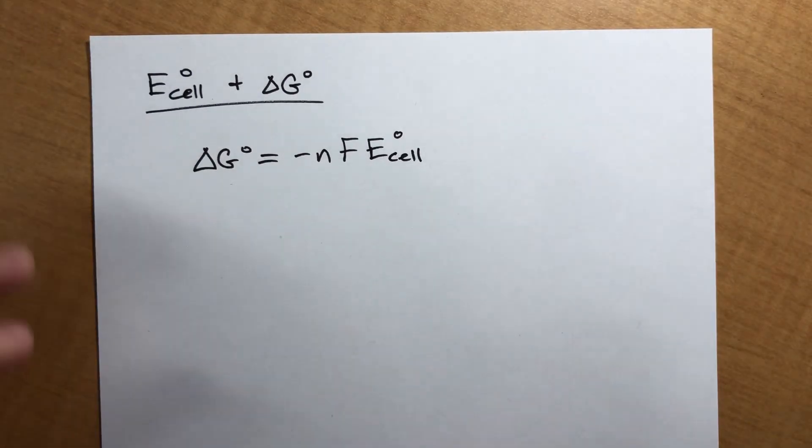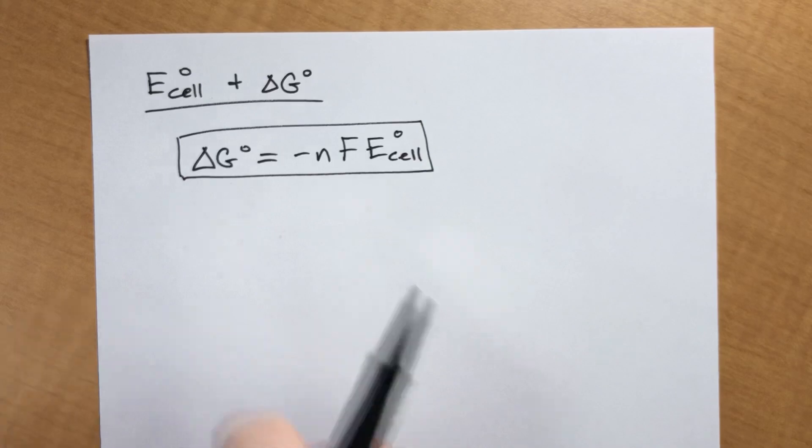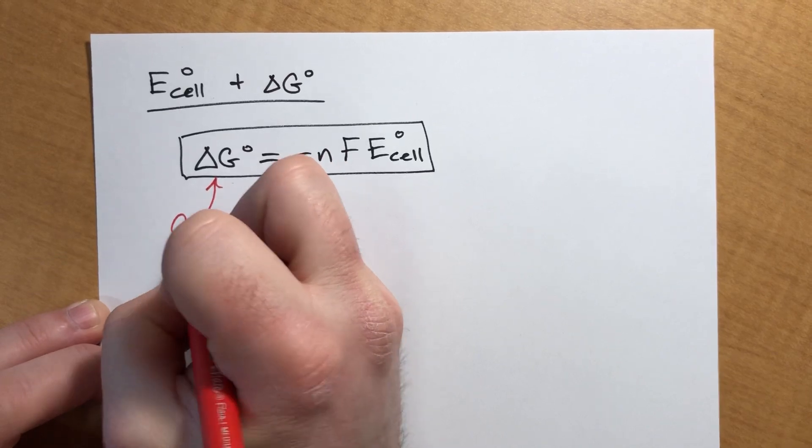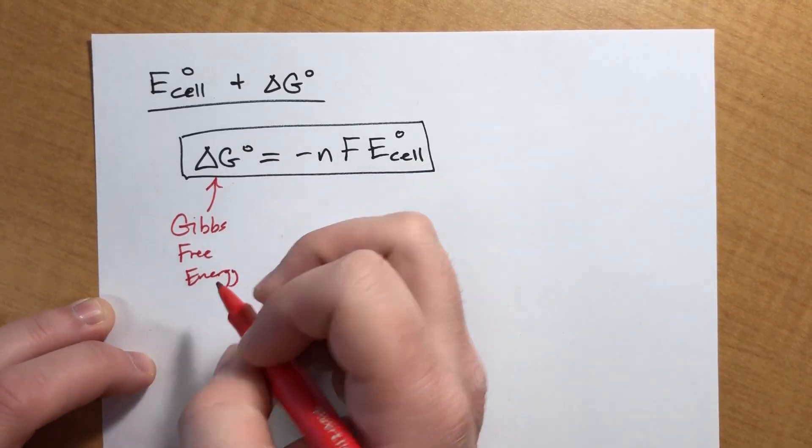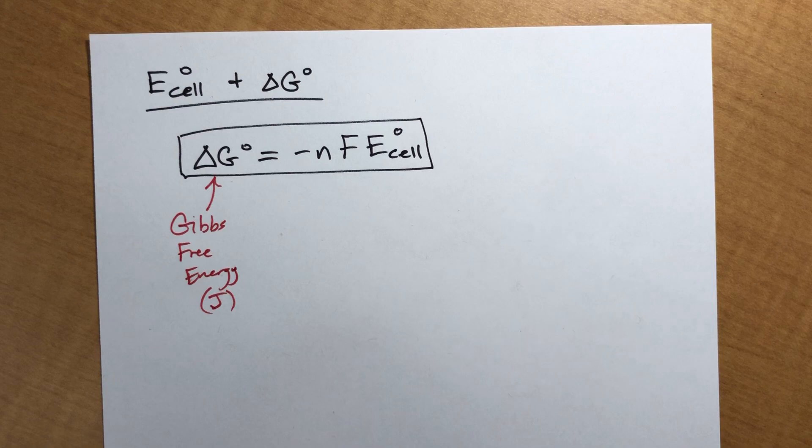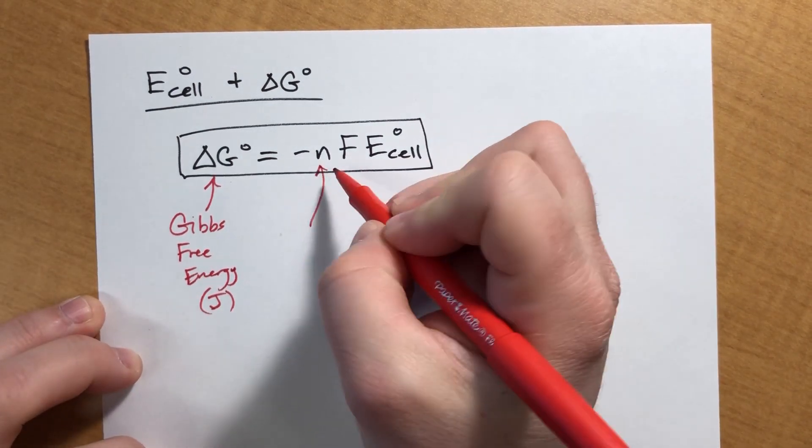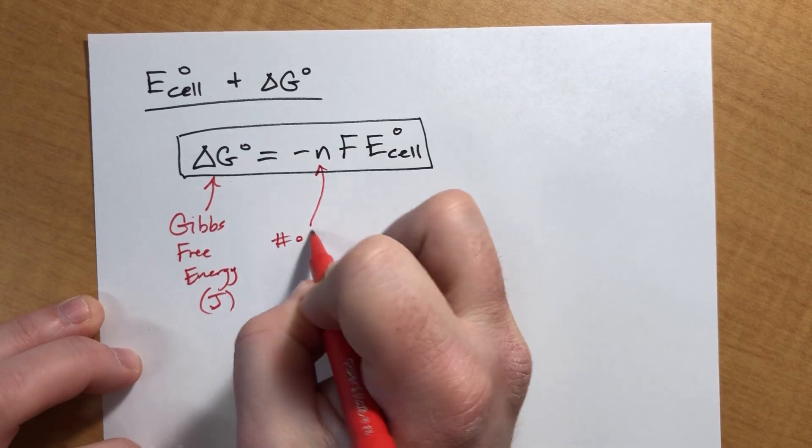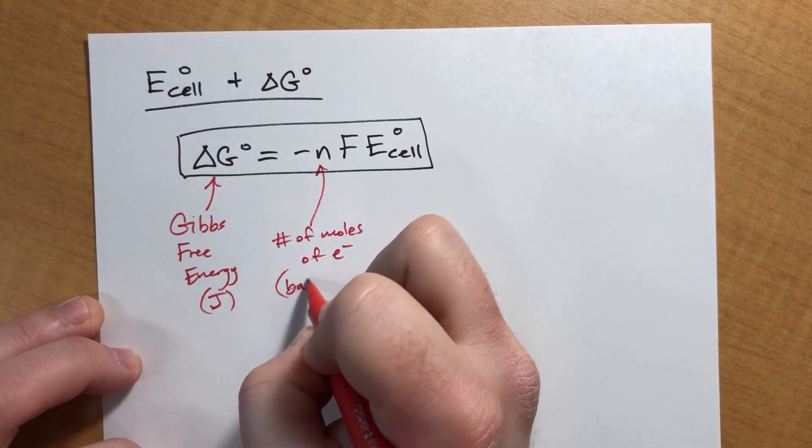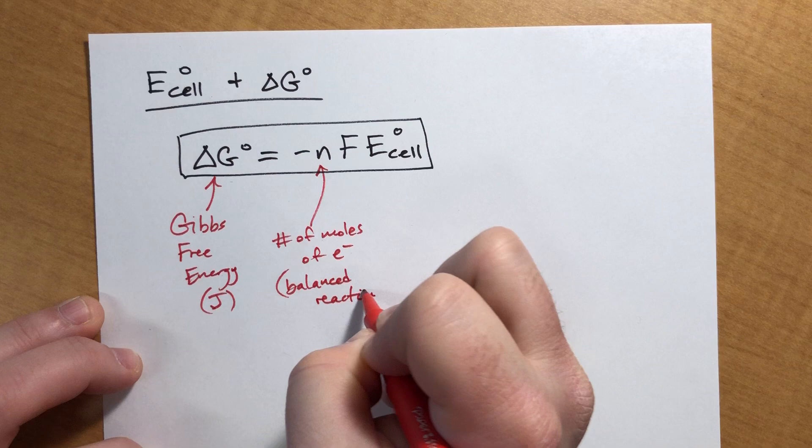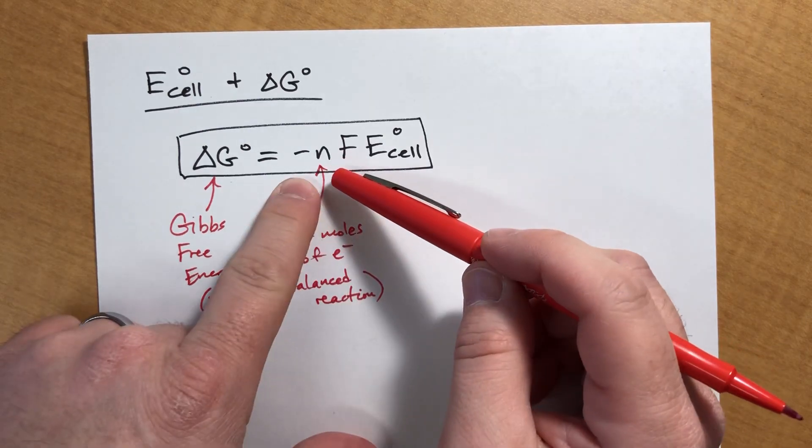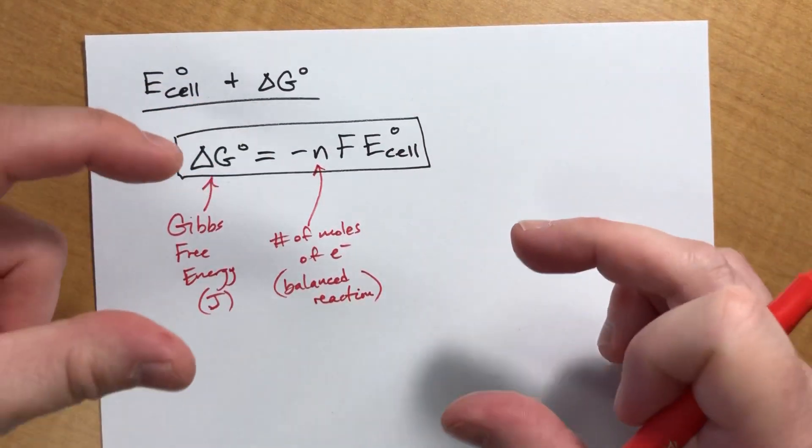So let me label all of these things so that you know what it is. Delta G is Gibbs free energy, in this case it's going to need to be in joules. N is the number of moles of electrons in the balanced reaction. So you remember at the very beginning of this chapter when we learned how to balance half reactions? We had to scale up the electrons to cancel it out. That N value is how many electrons they needed to cancel out.